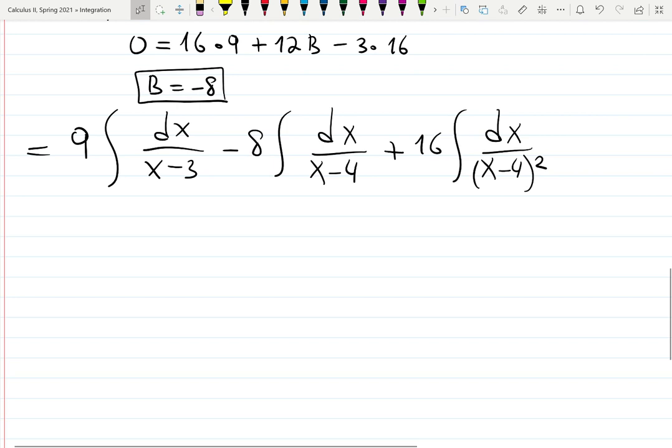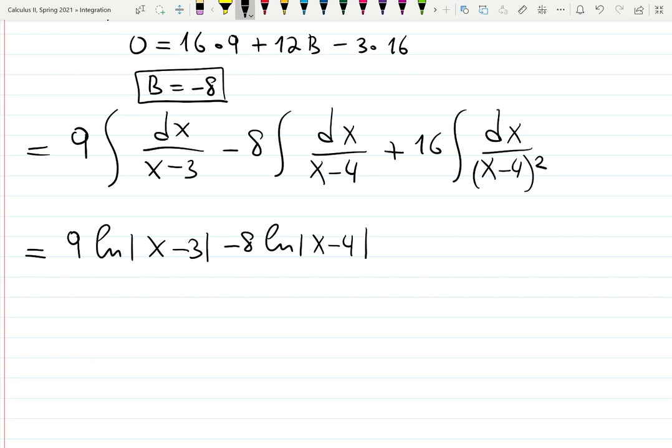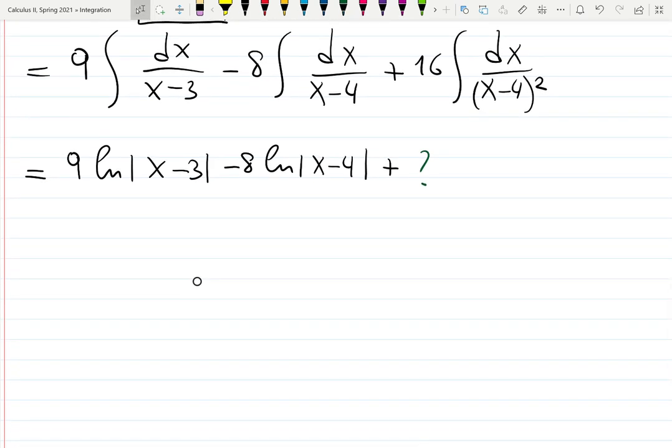Now the first two are natural logarithms. We know that. So the first two will be 9 natural log absolute value x minus 3, minus 8 natural log x minus 4. We know that. Don't forget to divide by the leading coefficient. And what is happening with 16 with the last integral? Let's do it separately.